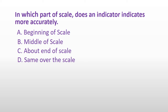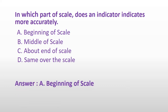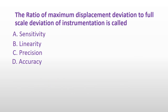In which part of the scale does an indicator indicate more accurately? Option A: Beginning of scale. Option B: Middle of scale. Option C: About end of scale. Or Option D: Same over the scale. And the answer is Option A: Beginning of scale. The ratio of maximum displacement deviation to full scale deviation of instrumentation is called: Option A: Sensitivity. Option B: Linearity. Option C: Precision. Or Option D: Accuracy. And the answer is Option B: Linearity.